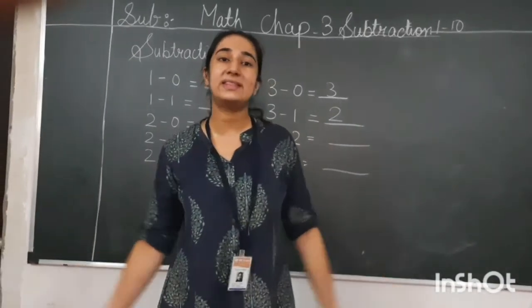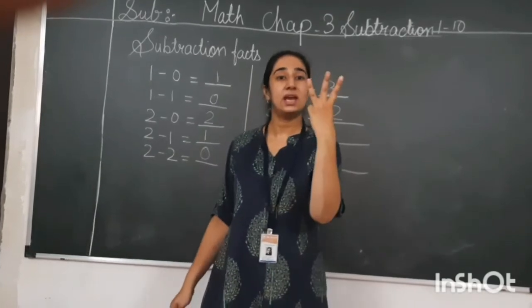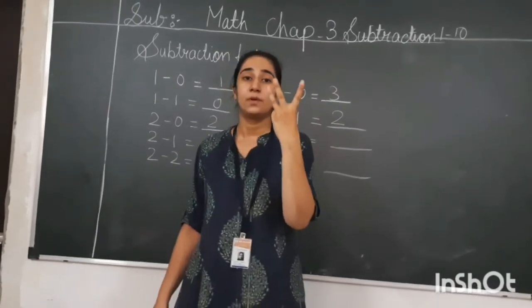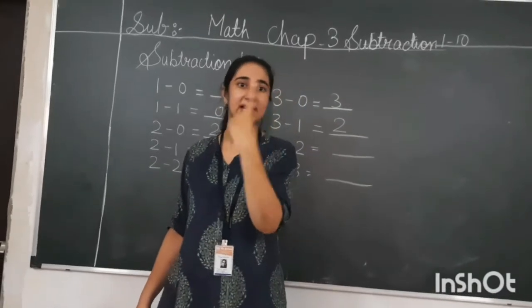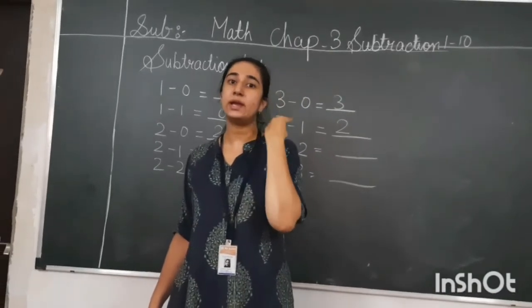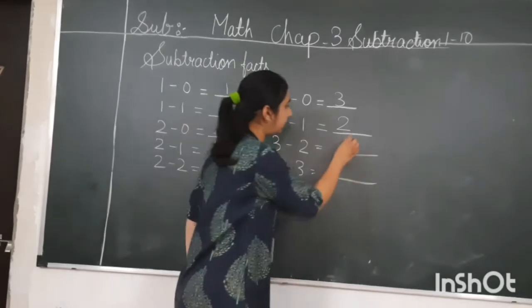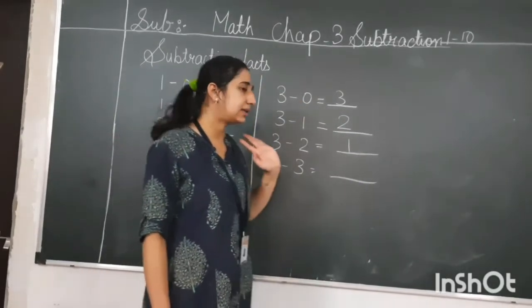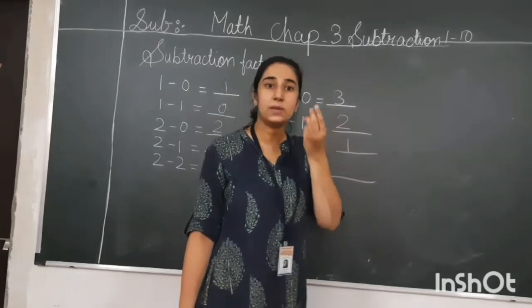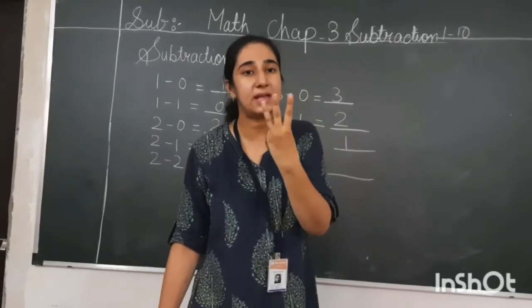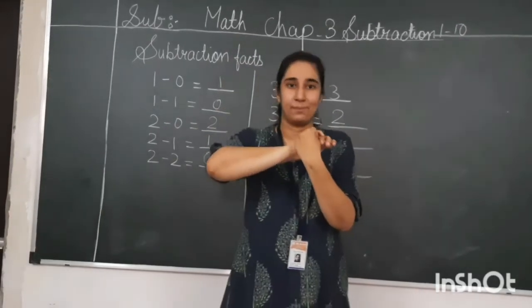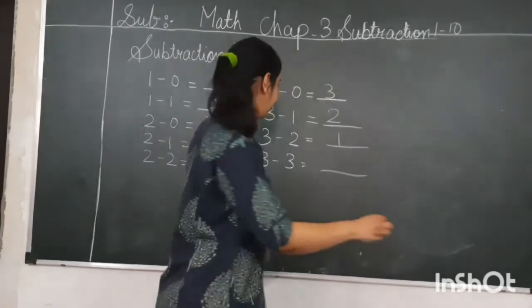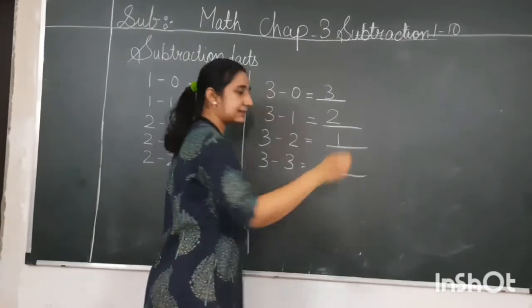Now, 3 minus 2. You are having three pencils and two are being taken from you. How many are left? Only one — so one will be the answer. Here, 3 minus 3. You are having three pencils and all three pencils you are giving to ma'am. What will be the answer? Zero.